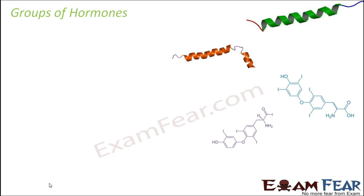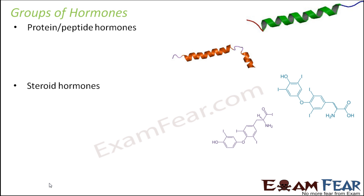Now, in order to understand hormone action more clearly, let us first try to understand what are the different groups of hormones present inside our body. We saw many different hormones — the thyroid hormones, the adrenal hormones, the corticoids. All hormones can be divided into four groups: protein hormones or peptide hormones, steroid hormones, thyroid hormones, and amino acid derivatives.